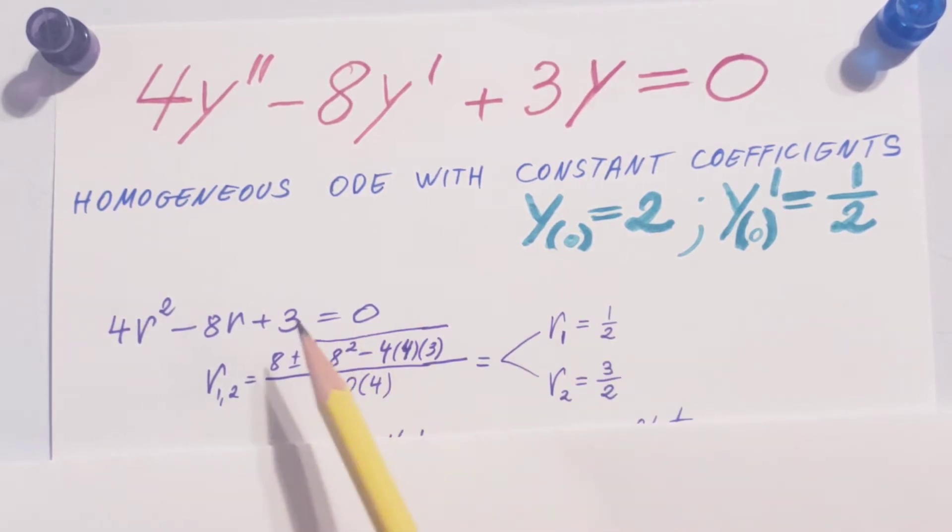Now, this is, we know that when we're working with homogeneous equations, there's three options that we can end up with. We can have real roots with two different and distinct. We can have two roots that are the same and they are real, or there's complex roots. This is the situation where we have two roots that are real and they are also distinct.